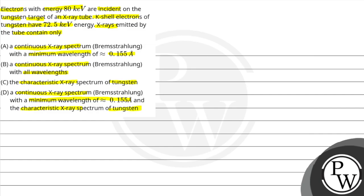इस question में हमारे पास energy जो दिया है वो 80 kilo electron volt दिया हुआ है और हमारे पास एक tungsten target दिया है जिसका K shell के electron का जो energy है वो 72.5 kilo electron volt दिया है। तो यहाँ पर जो x-rays emit होंगे उनका जो wavelength होगा वो क्या होगा, यह हमें find out करना है।